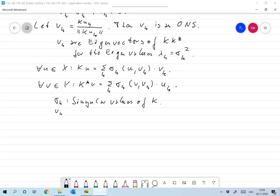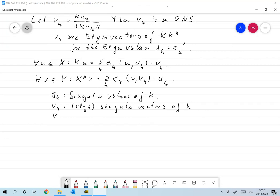u_k are singular vectors or right singular vectors of K, and the v_k are the left singular vectors of K. And of course now we'll have to prove all this.